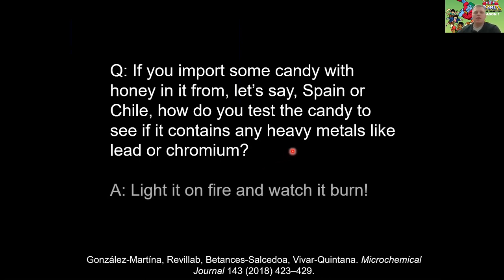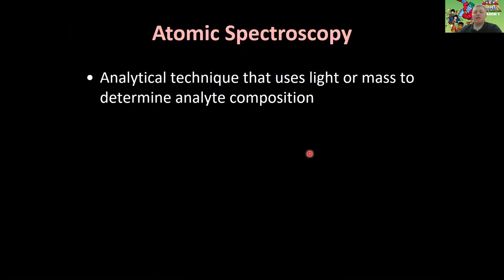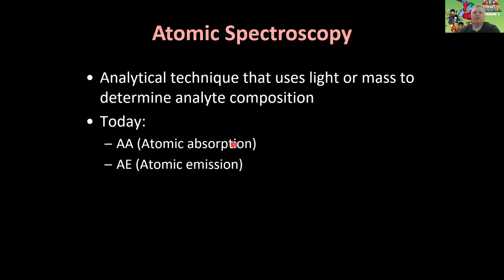Well, the answer is you're going to light it on fire and watch it burn. Today we're going to be talking about atomic spectroscopy, and in atomic spectroscopy we do just that — we light our samples on fire. Depending on whether we're doing atomic absorption spectroscopy or atomic emission spectroscopy, we're either going to shine light through it to see if it absorbs any light, or we're going to see if it's giving off any light if it's really hot. Those are the two types of atomic spectroscopy we're going to talk about today: atomic absorption and atomic emission.